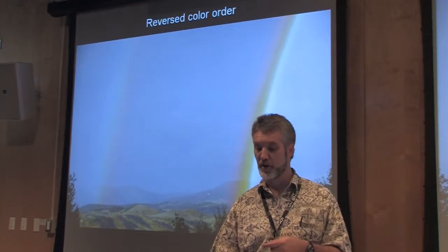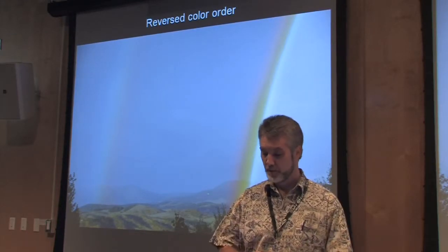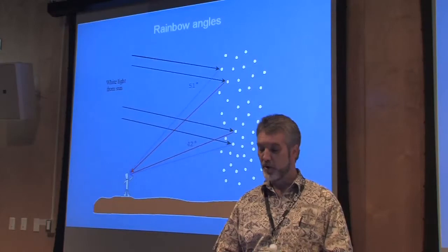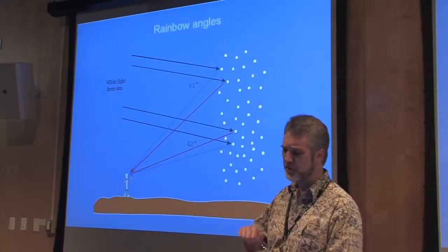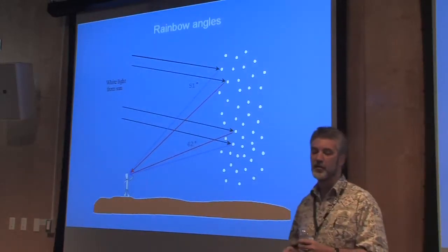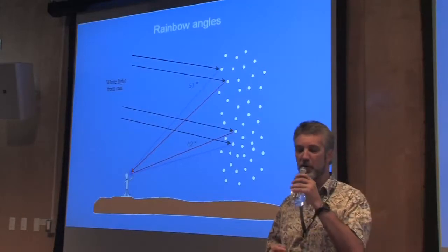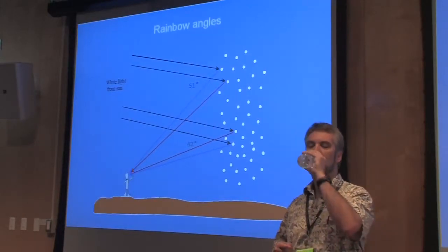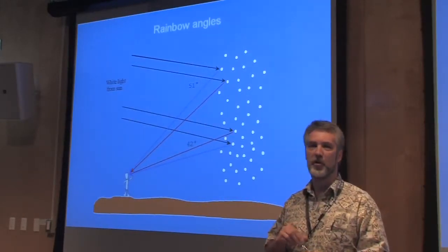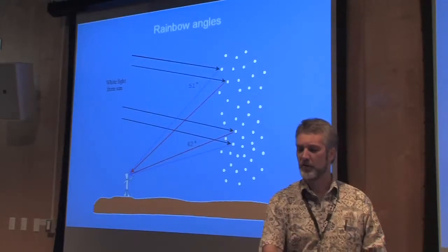Here's the reverse color order that we talked about in rainbows. Rainbow angles — if you go through the geometry, you find there's a mean angle of about 42 degrees for the primary rainbow and about 51 degrees for the secondary rainbow.